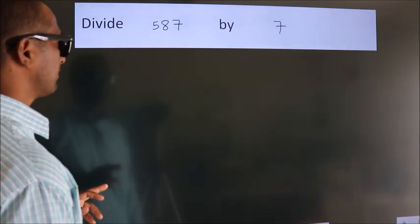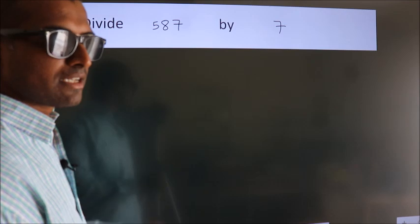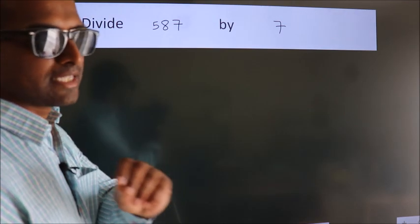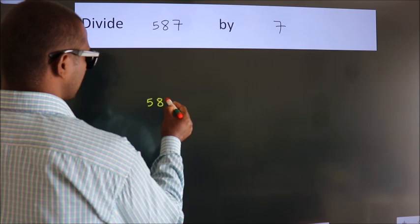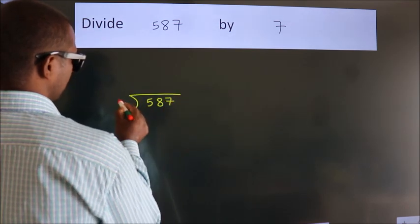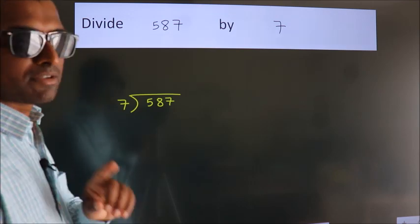Divide 587 by 7. To do this division we should frame it in this way. 587 here, 7 here. This is your step 1.